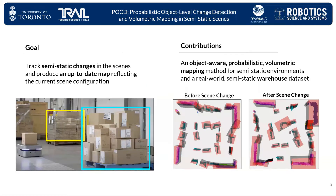We aim to develop a system to track semi-static changes in the scene and produce an up-to-date map reflecting the current scene configuration. In this presentation, we introduce an object-level probabilistic mapping method to tackle this challenge. The proposed method is verified on a real-world semi-static warehouse dataset, which we release with this work.